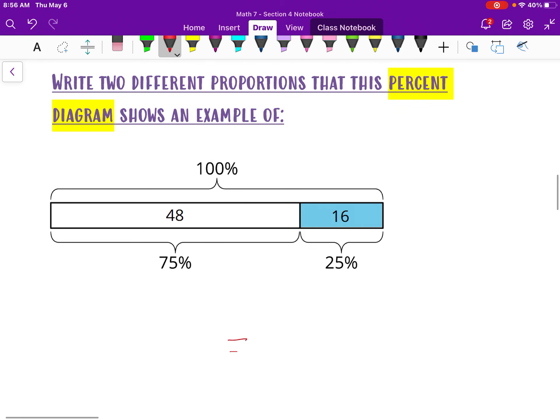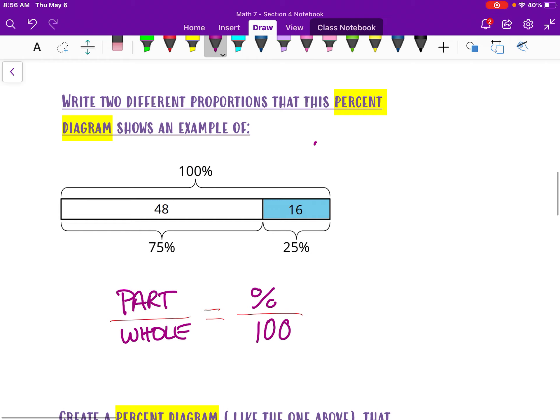So when you think of your percent proportion, remember that we're always going to end up having percent over 100, right? And then that is representing our part over our whole. So this proportion is showing, it has two different parts it's showing. It's showing the part of 48, but it's also showing the part of 16.